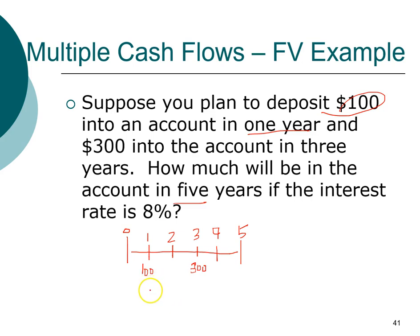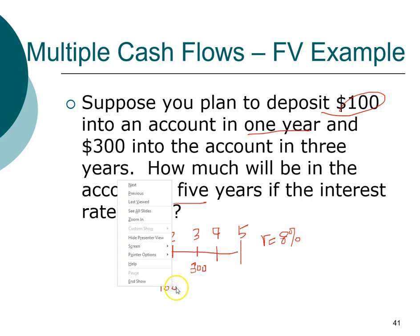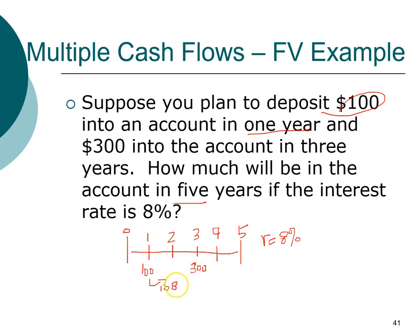We can solve this in a number of ways. The most intuitive way is to accumulate interest one year at a time. With 8%, after year one the $100 will grow to $108. Then between year two and year three, the $108 will earn interest again and grow to $116.64 by the end of year three. Since you also put in an additional $300, you'll have $416.64 altogether at the end of year three.